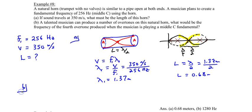Okay, on to part B. A talented musician can produce a number of overtones like the second, the third, the fourth, and so forth. What would be the frequency of the fourth overtone produced when the musician is playing the middle C fundamental?